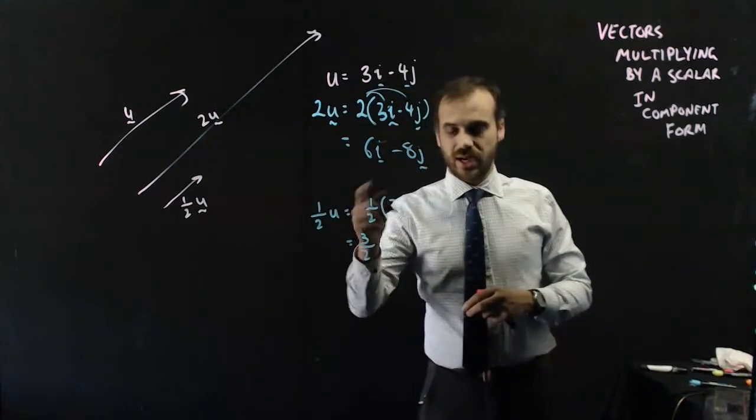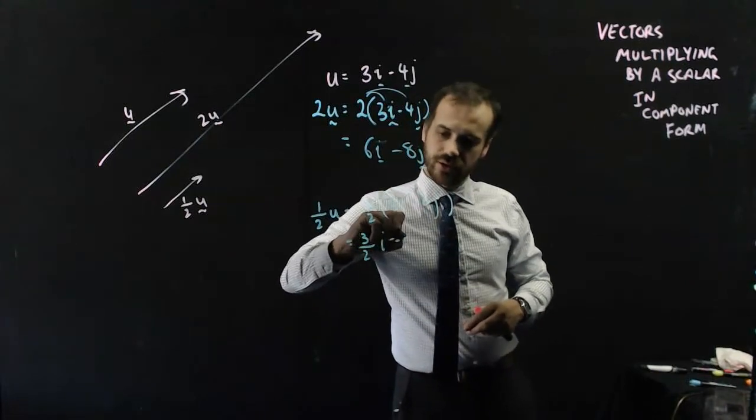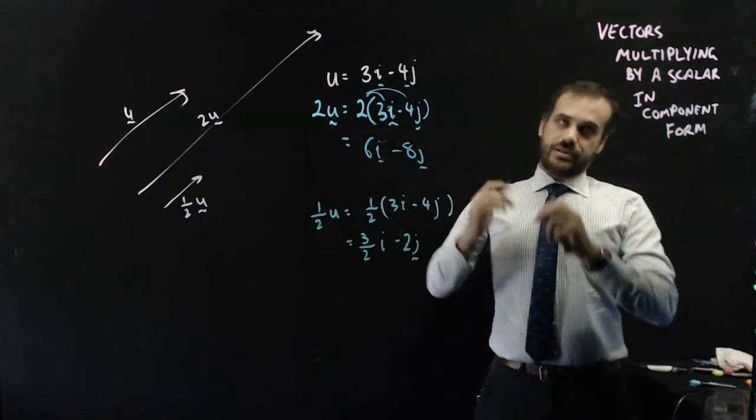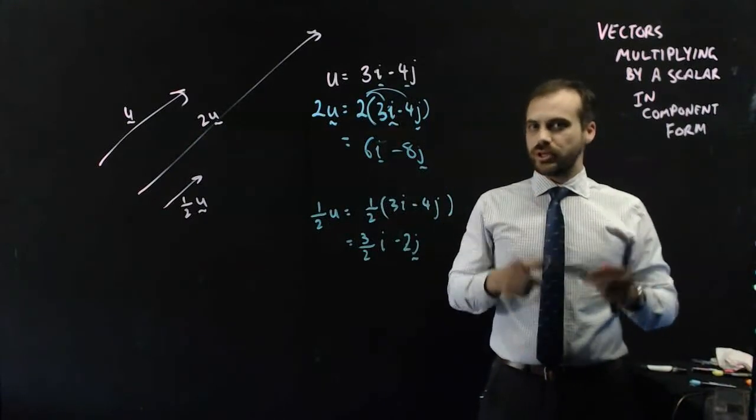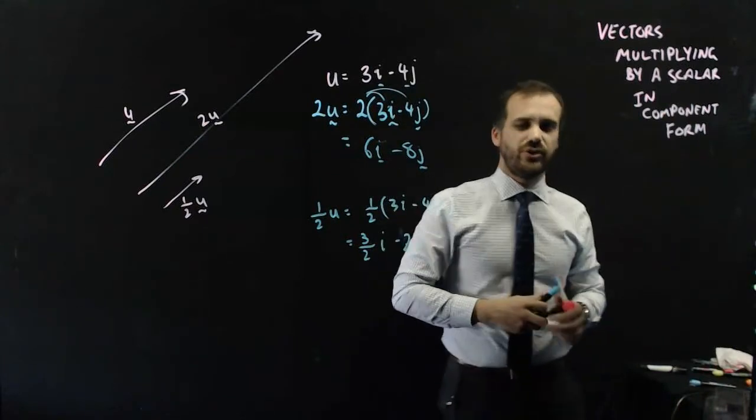Okay, negative 4 times 1 half is negative 2j. Great. That's multiplying by a scalar vectors if they're written in component form. Easy stuff.